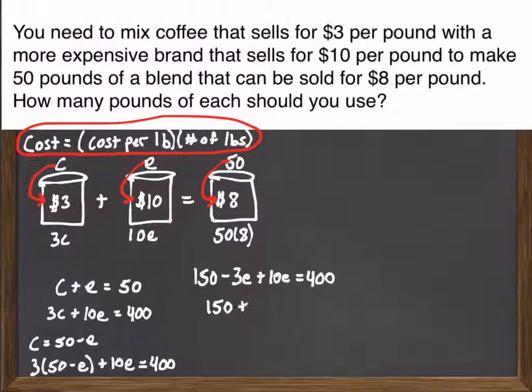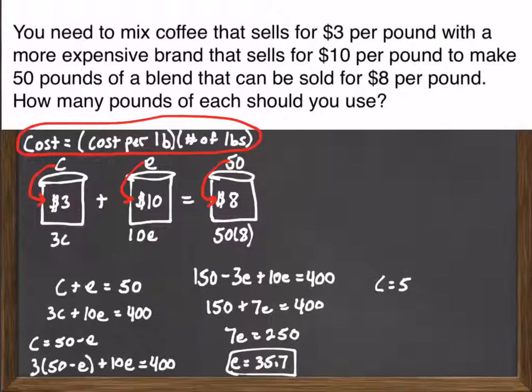Combine like terms, I get 150 plus 7E is equal to 400. So I subtract the 150 from both sides. Divide by 7. And when I do that, when I divide by 7 there, I get E equals 35.7.